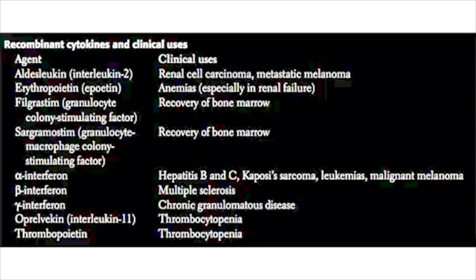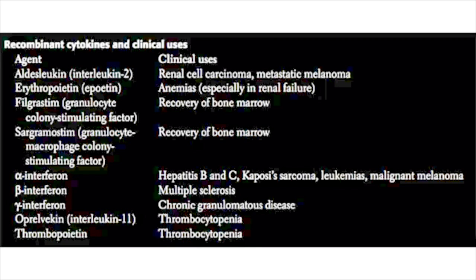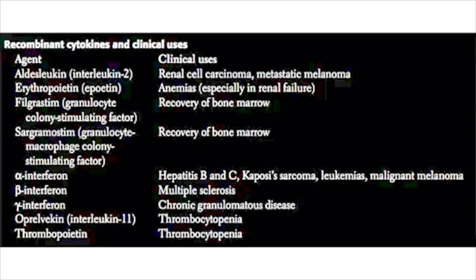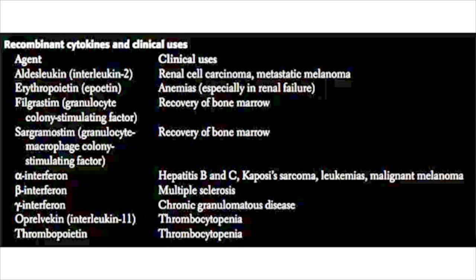Erythropoietin, or epoetin, is used for treating chronic anemia associated with chronic kidney disease — it causes the bone marrow to produce new red blood cells. Filgrastim is also known as granulocyte colony-stimulating factor (G-CSF), and is used for neutropenic patients who have failure of their bone marrow. This drug causes the bone marrow to start producing a larger amount of neutrophils.